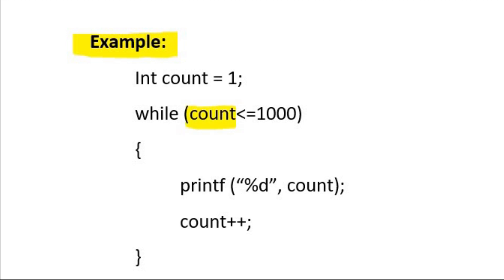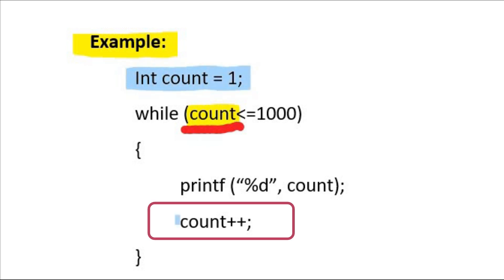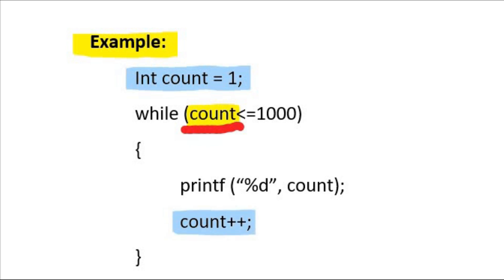The variable count is a loop control variable, playing a very important role in while loop. The value of count variable decides whether the body of loop will execute or not. A variable that controls the number of iterations is called a loop control variable. The loop control variable is always initialized outside the body of loop, but it is incremented or decremented inside the body of loop. A common mistake students make while writing the while loop is putting a semicolon at the end of the while statement, which is wrong — this is a syntax error. So make sure not to do this mistake.